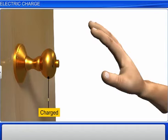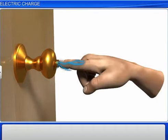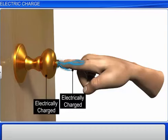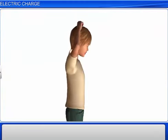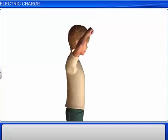Objects that carry an electric charge are said to be electrically charged. We know that when a comb is rubbed against dry hair, it begins to attract small pieces of paper.